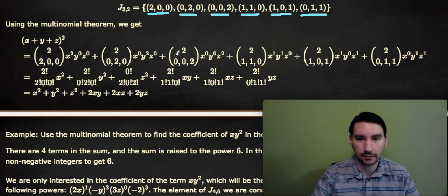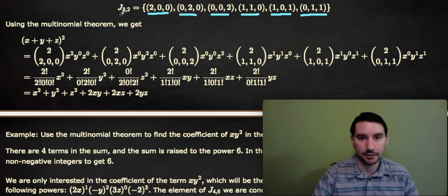And then we have (0,0,2), so we're going to have 2 choose (0,0,2), and then we have (0,0,2) in the exponents. Then we do the same with the 1s, so the (1,1,0) and the (1,1,0) corresponds to this (1,1,0). So we're summing over all the tuples in this J₃₂.